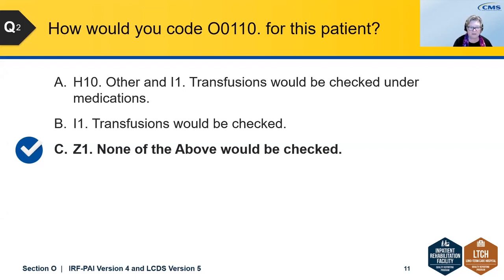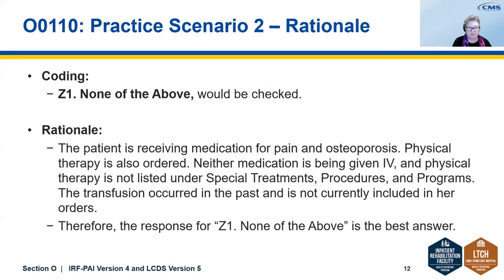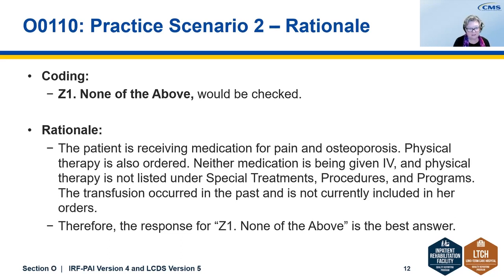Most of you — more than half — answered Z, none of the above, and that would be the correct answer. This patient is receiving medications for pain and osteoporosis, and physical therapy is also ordered. However, neither medication is being given IV, and PT is not listed under special treatments, procedures, and programs. The transfusion that occurred is in the past and is not currently included in her orders. Therefore, the response would be Z1, none of the above.